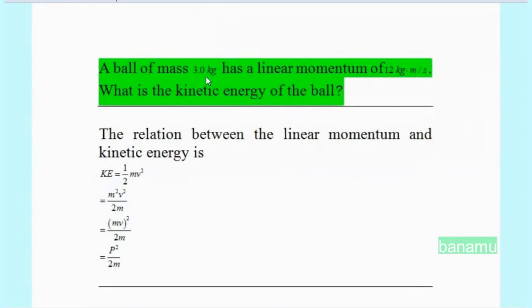A ball of mass 3 kg has a linear momentum of 12 kg·m per second. What is the kinetic energy of the ball?